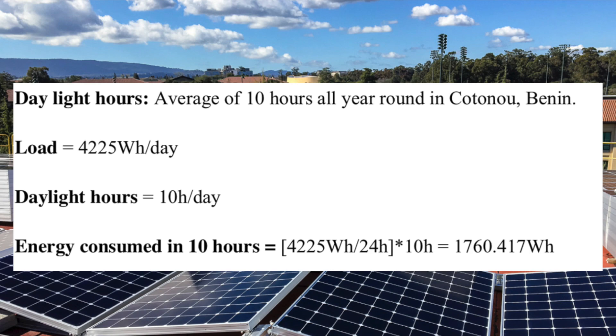So we know the daily energy requirement and we know that the sun will be out for 10 hours of the day. How much energy will be consumed in 10 hours? This can be calculated by taking your daily load requirement, which we have determined to be 4,225 watt-hours in a day — which is in 24 hours — divided by 24 hours, multiplied by 10 hours of the day when the sun is out. That will give us approximately 1,716 watt-hours.